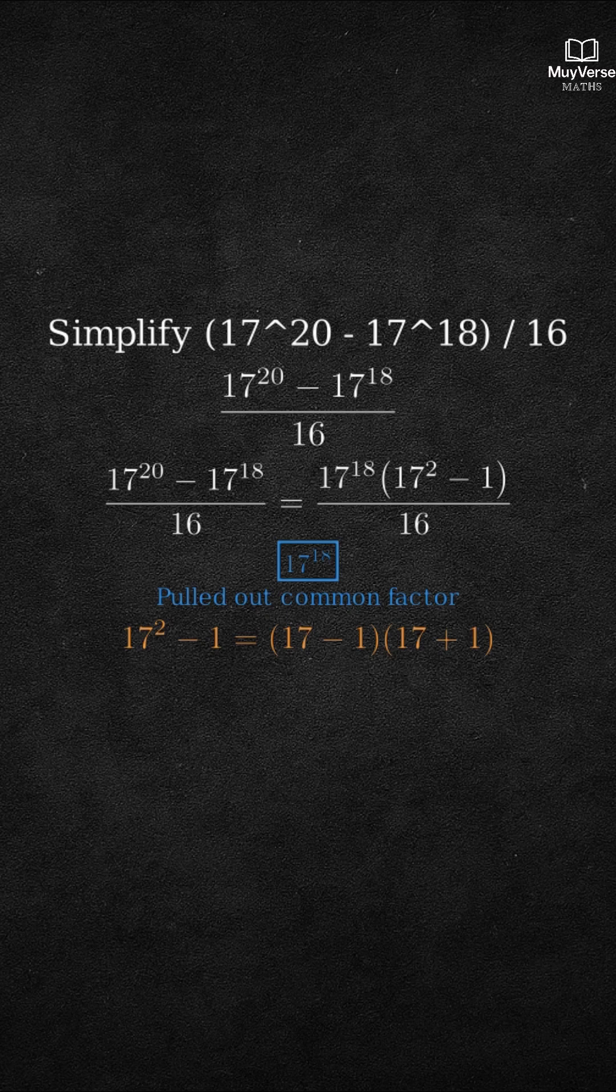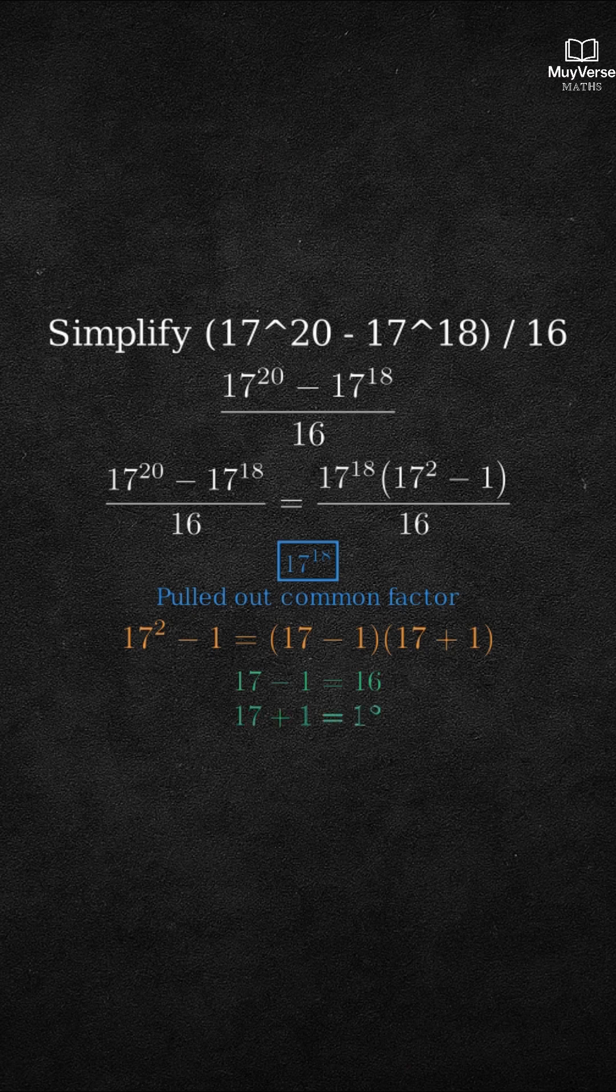Now compute each quickly. 17 minus 1 equals 16. 17 plus 1 equals 18.